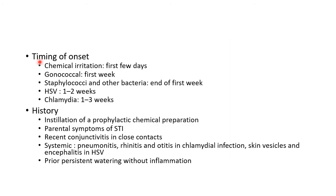It is possible to know the cause of neonatal conjunctivitis based on timing of onset. Chemical conjunctivitis appears within the first few days of birth. Gonococcal conjunctivitis appears in the first week. Staphylococci and other bacterial conjunctivitis appear at the end of the first week. HSV conjunctivitis appears 1-2 weeks after birth. Chlamydial conjunctivitis appears 1-3 weeks after birth.